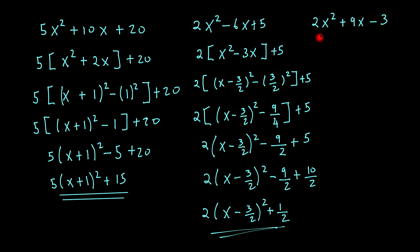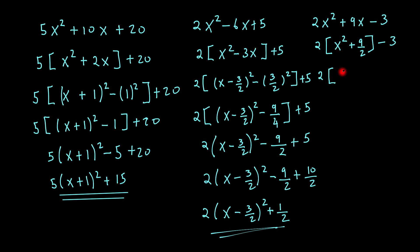Now let's look at the final one. This time we're going to have a fraction in here because of the 9 being an odd number. So if I go ahead and do that — take my x here, so that's x squared, and that would be plus 9 over 2, and that's 9 over 2 because I've taken 2 as a factor here, and that will be minus 3. So once again I go ahead and open two brackets — so that would be x plus 9, now it would be — so if I half this, that would be 9 over 4, that would be all squared.